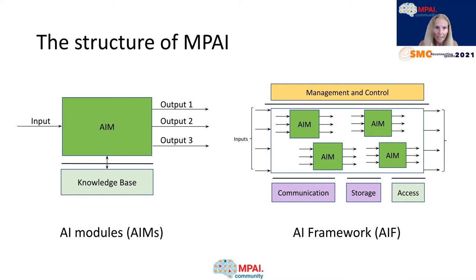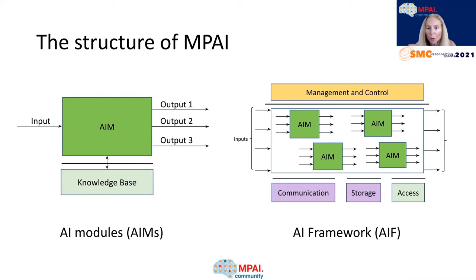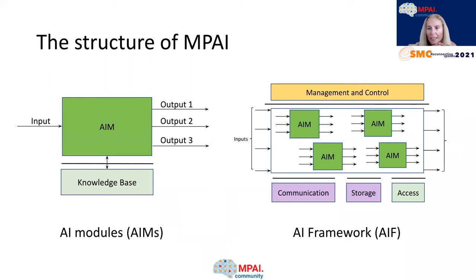The interesting thing about the MPI standard is that it doesn't define the internal behavior of the AIMs, but it clearly specifies the syntax and the semantics of the interfaces — in this particular case, the inputs and outputs and how it interacts with the knowledge-based unit. On the right side of the slide, I'm showing a general workflow for the MPI structure. In this workflow, the AIMs operate and exchange data in very specific formats. The idea that the format is specified allows for the AIMs to be replaceable, reusable and upgradable without changing the logic of the specific application.